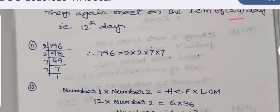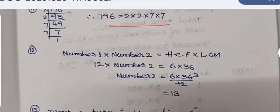196 is to be expressed as the product of prime factorization, so this is the prime factorization: 2 × 2 × 7 × 7. There is a rule that the product of the two numbers is equal to HCF and LCM. When one number is known, the other number is product of HCF and LCM divided by the number.